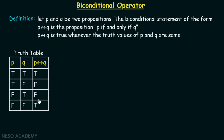Why is this the case? Biconditional simply means not only is P sufficient for Q, but P is necessary for Q as well. Therefore, when P is true, Q has to be true, and when P is false, Q has to be false. Similarly, when Q is true, P has to be true, and when Q is false, P has to be false. That is the reason why only those two combinations give us a true compound proposition.